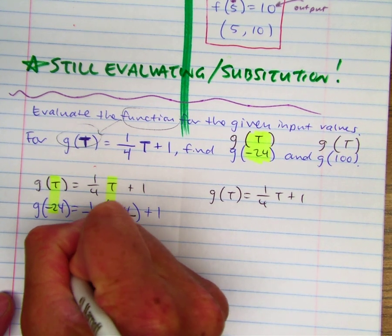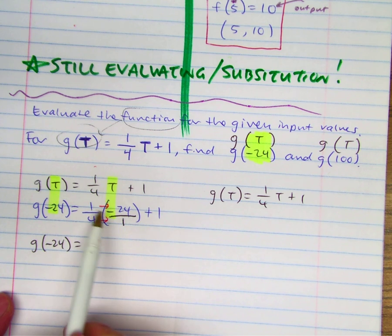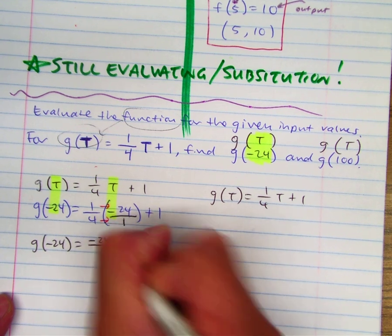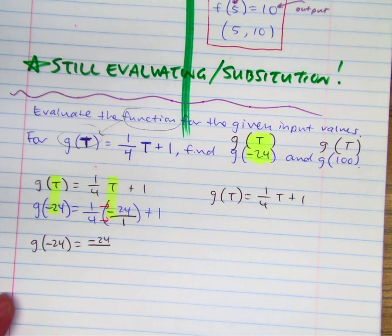g of negative twenty-four equals... Claus, what's one times negative twenty-four? Negative twenty-four. And four times one? Four.